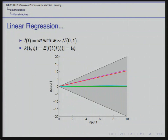Another interesting non-stationary kernel is the linear kernel, important to connect to because of our familiarity with linear models. If our regression function f(t) is a linear function of t with some random weight w, evaluating this kernel gives a growing variance envelope. When we take draws from this kernel, you just get straight lines. This is Bayesian linear regression.